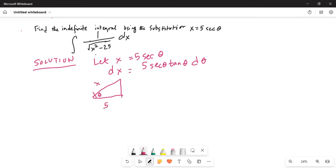This side is x and this is square root of x squared minus 25 from Pythagorean theorem. Since x squared is equal to the square of this side plus 25. Therefore, if we transpose, then this side is equal to square root of x squared minus 25.